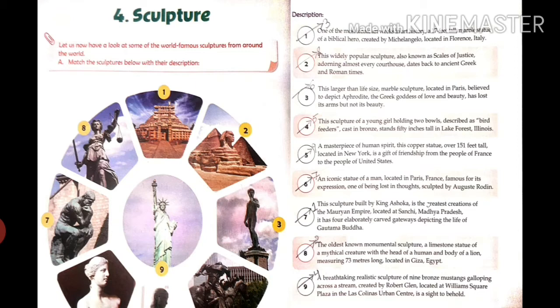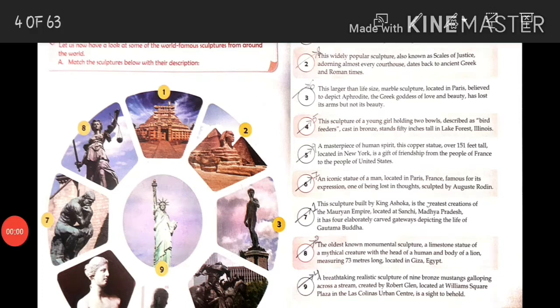A breathtaking realistic sculpture of nine bronze mustangs galloping across a stream, created by Robert Glen, located at Williams Square Plaza in the Las Colinas Urban Center — a sight to behold. The ninth description is related to the fourth picture.